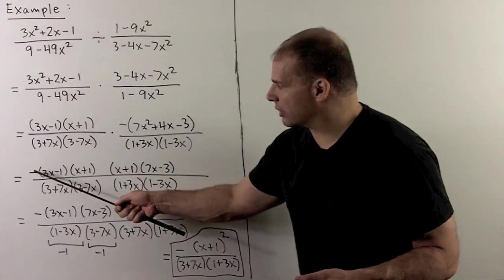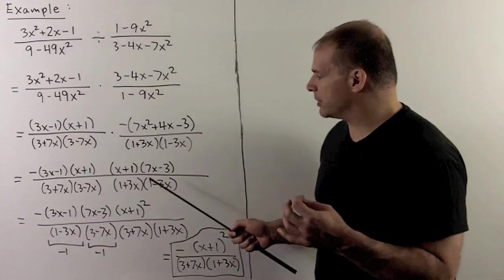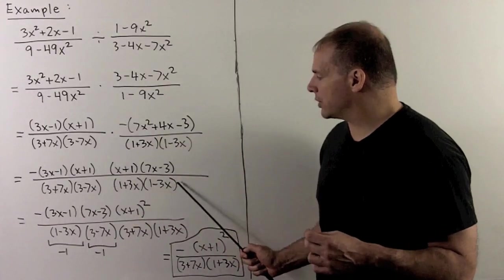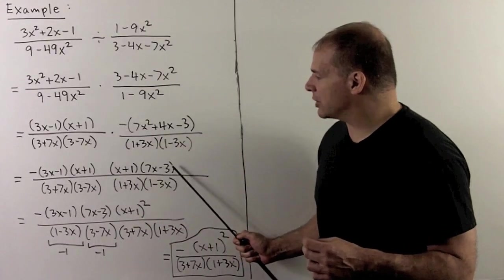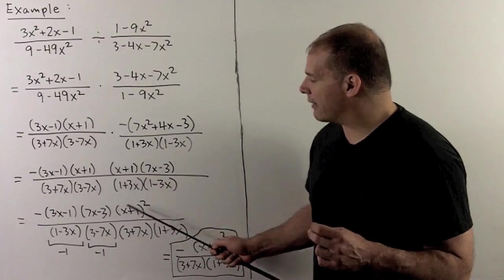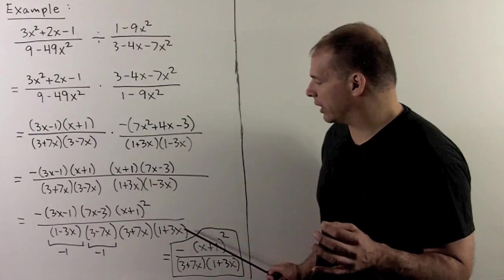Things are factored completely. I'll move this minus sign out into the front. Now, what I want to do to improve our bookkeeping is to put like terms together. So for instance, I want the 3x minus 1 with the 1 minus 3x. 7x minus 3 with the 3 minus 7x. Then what's left over? I have an x plus 1 squared. Underneath, we have a 3 plus 7x times a 1 plus 3x.